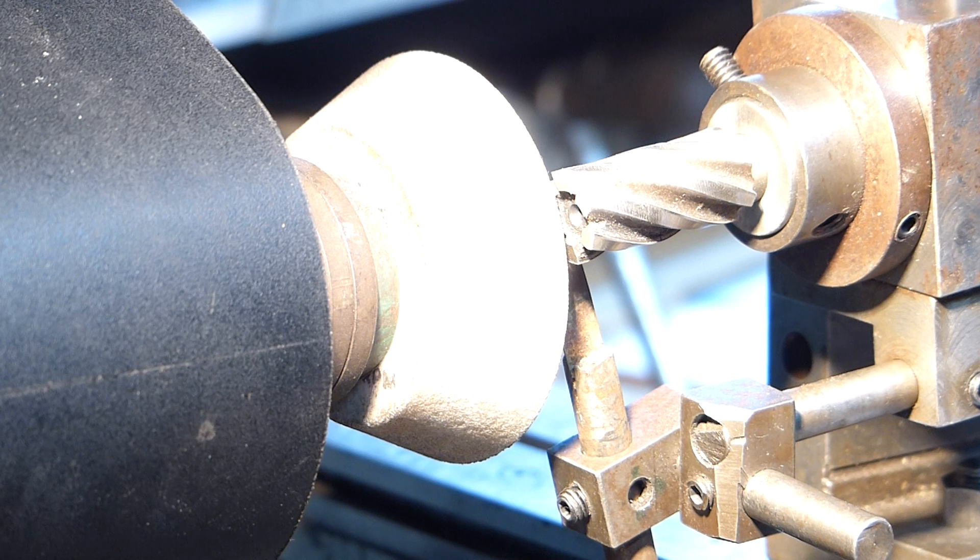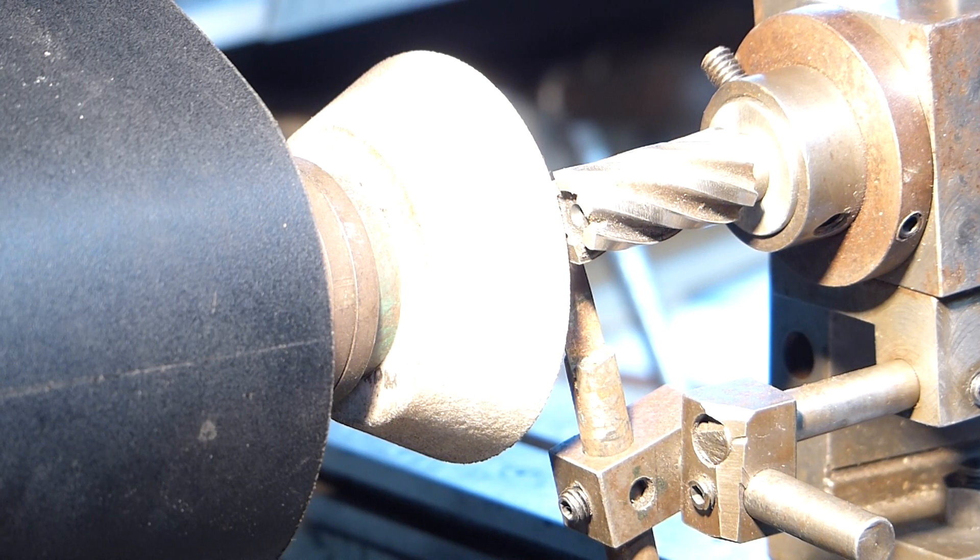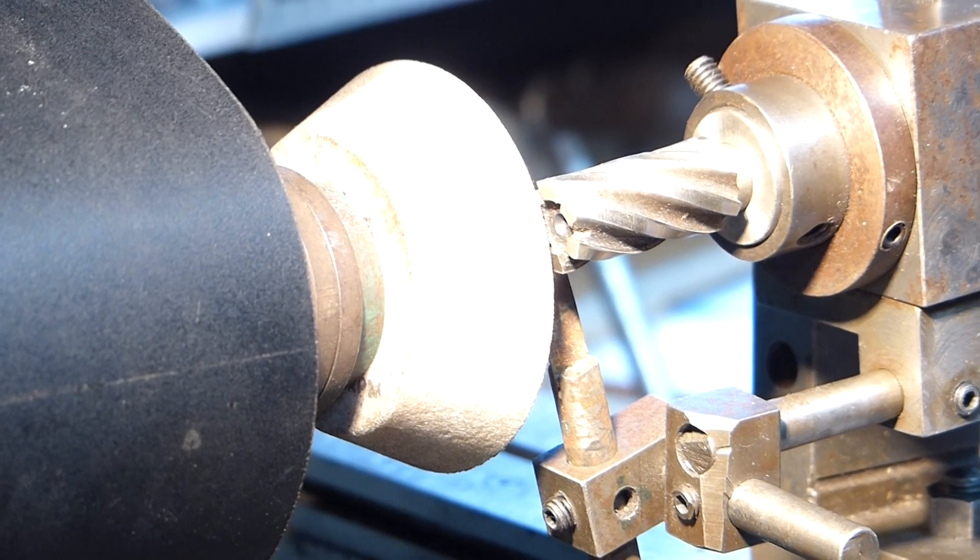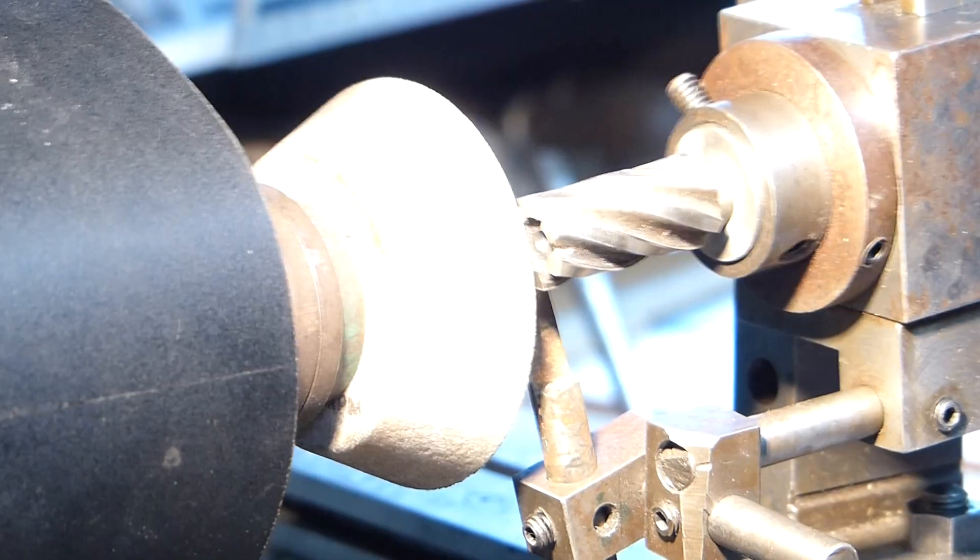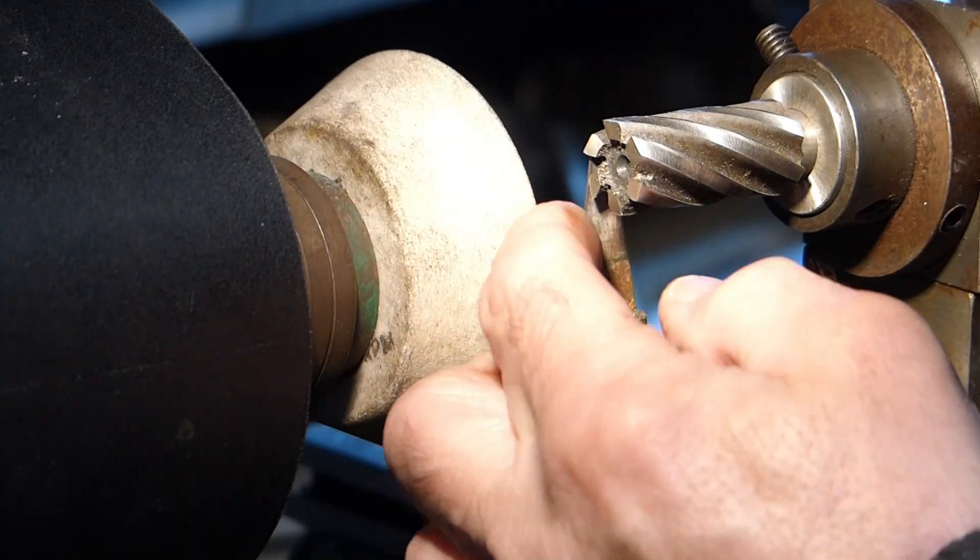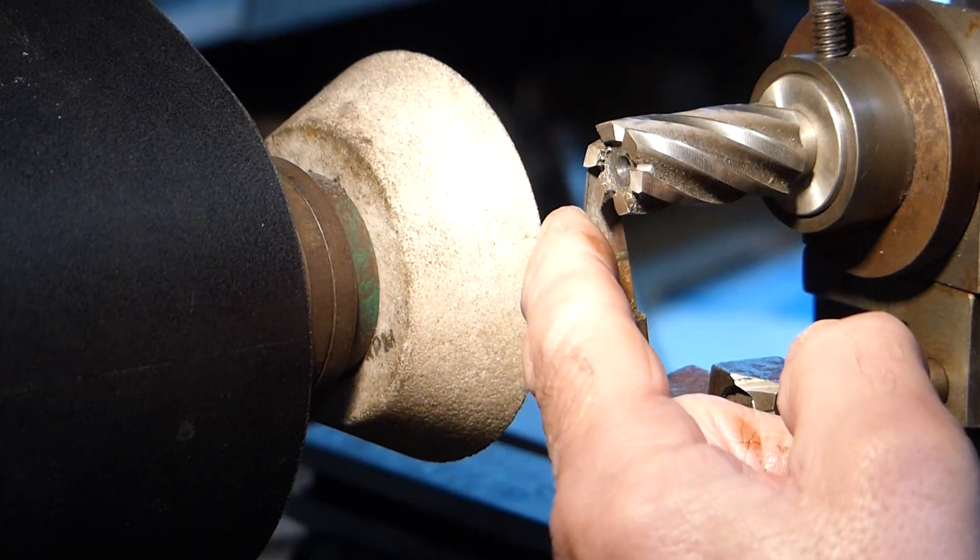What I need to do now is just to dress the face of the cup wheel slightly, just to hollow it back so it presents a sharp cutting edge.